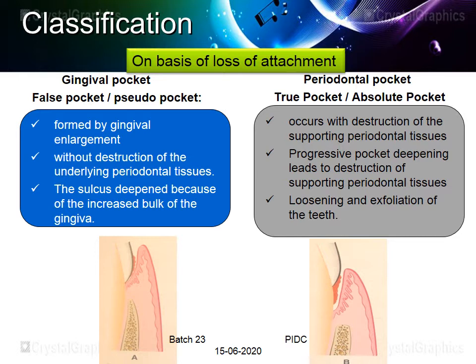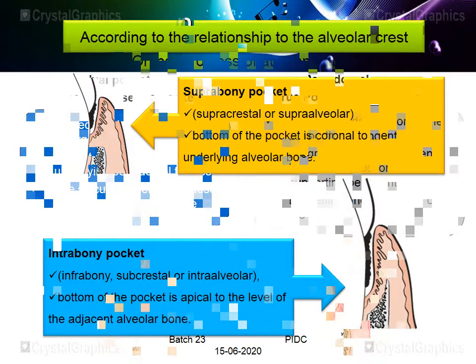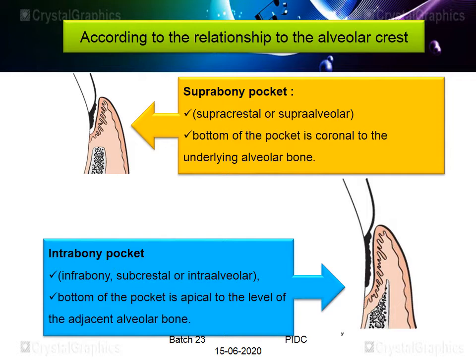On the basis of loss of attachment, pockets are classified as gingival pocket (false pocket or pseudo pocket) and periodontal pocket (true pocket or absolute pocket). A gingival pocket is formed by gingival enlargement alone — there is no destruction of the underlying periodontal tissues, so we call it a false pocket. A periodontal pocket occurs because of destruction of the underlying tissues, leading to progressive deepening, destruction of supporting periodontal structures, bone loss, and potentially tooth exfoliation.